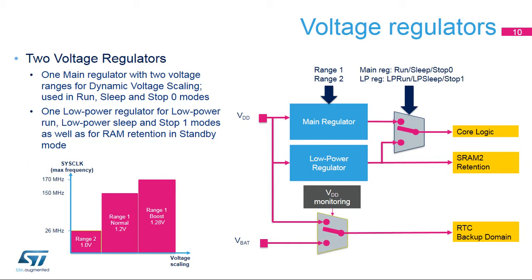Two embedded linear voltage regulators supply all the digital circuitries, except for the standby circuitry and the backup domain. The regulator output voltage, V-Core, can be programmed by software to two different values, depending on the performance and the power consumption requirements. This is called dynamic voltage scaling.